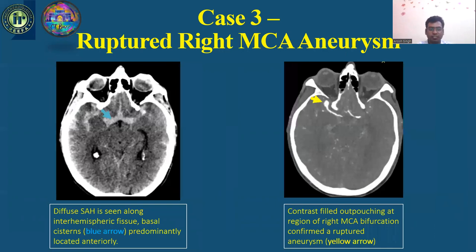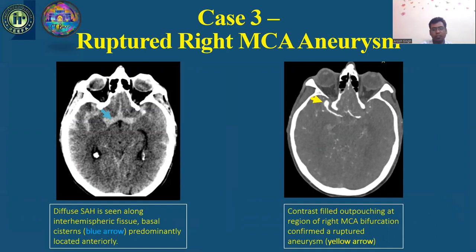Case 3: On NCCT head, we can see a ruptured right MCA aneurysm with diffuse SAH along the interhemispheric and basal cisterns shown by blue arrow, predominantly located anteriorly. On CT angiography, we can see a contrast-filled outpouching at the region of the right MCA bifurcation confirming a ruptured aneurysm, shown by yellow arrow.